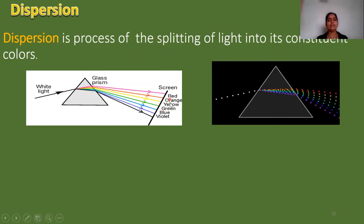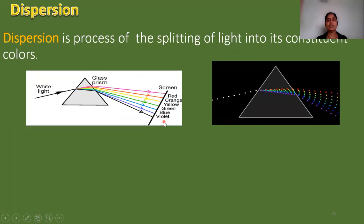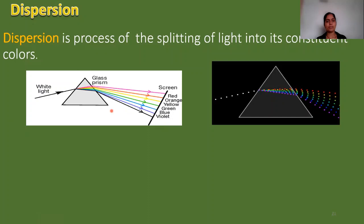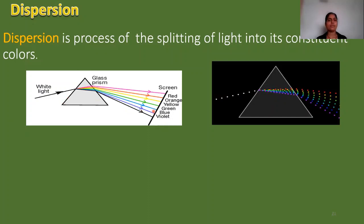The 7 colors are: Red, Orange, Yellow, Green, Blue, and Violet. We get these constituent colors — that is a separation of white light into 7 colors. That means dispersion.